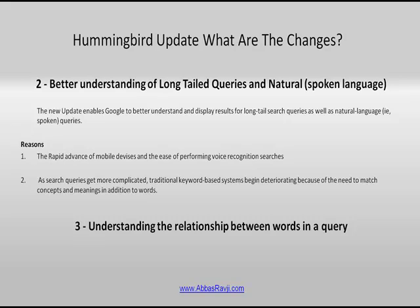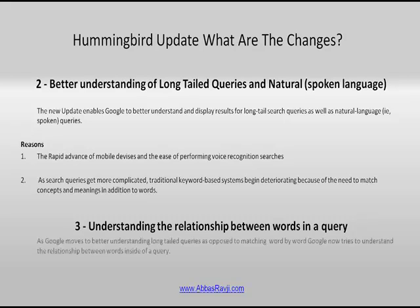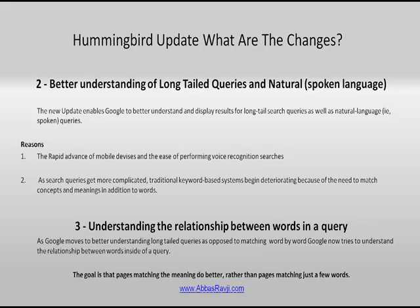This is exactly what the Google Hummingbird update is all about. The third and final point is that Google understands the relationship between words in a query. As Google moves to better understanding long-tail queries as opposed to matching word by word, Google now tries to understand the relationship between words inside a query. The end goal is that pages matching the meaning do better rather than pages matching just a few keywords.